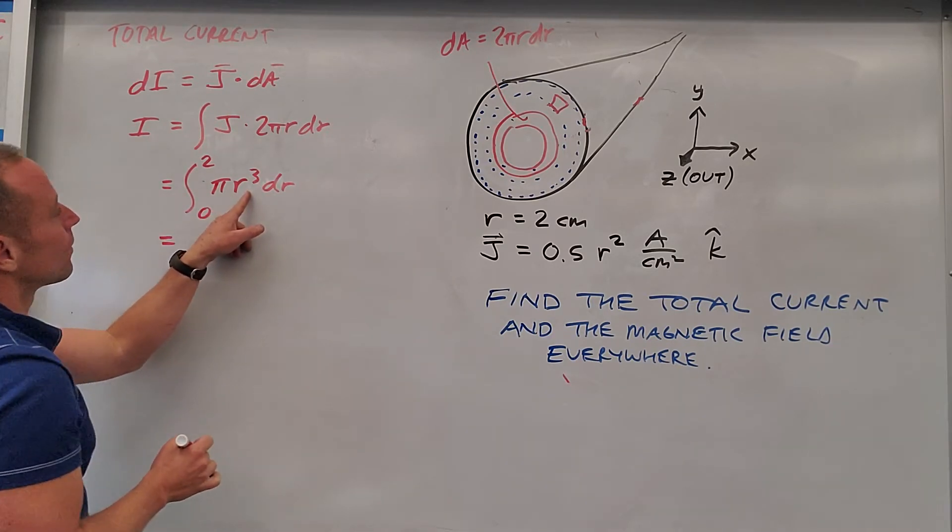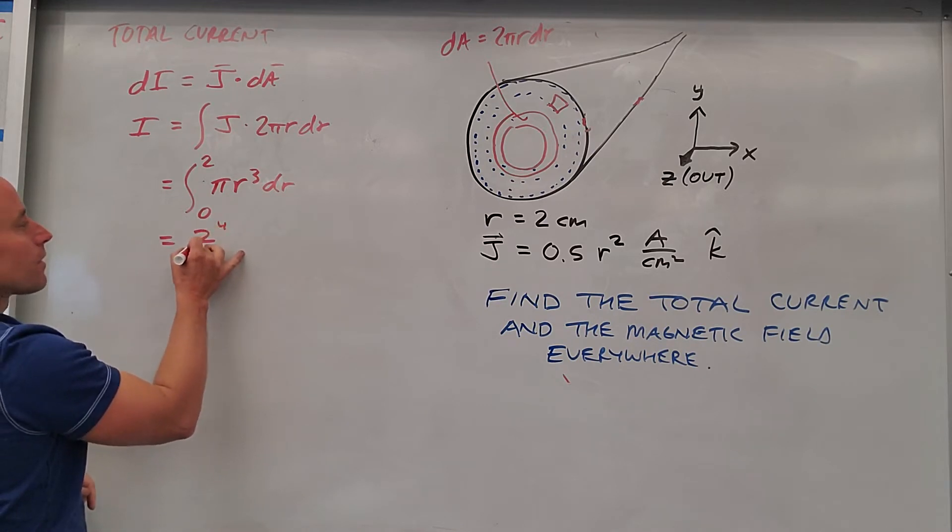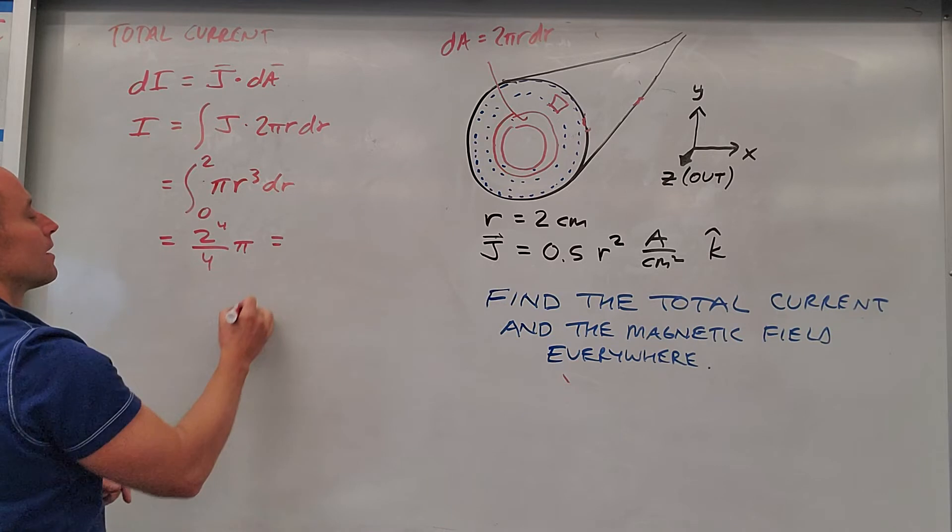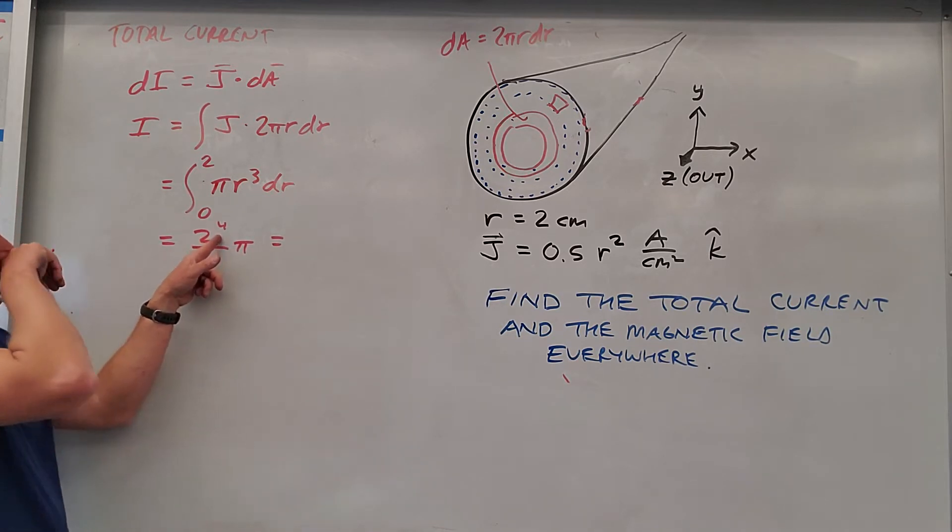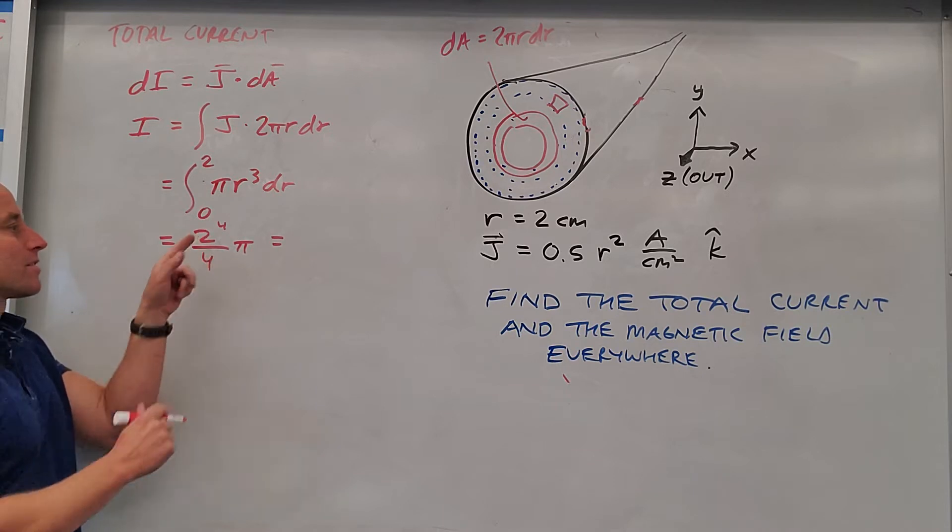And what we have to do to get all of it is go from 0 to the total radius, 0 to 2. And so what's this? r to the 4th over 4. So you'll get 2 to the 4th divided by 4 times pi. Well, 2 to the 4th, that's like 4 squared or 4 times 4, but then you cancel one of the 4s. So this will just be 4 pi.